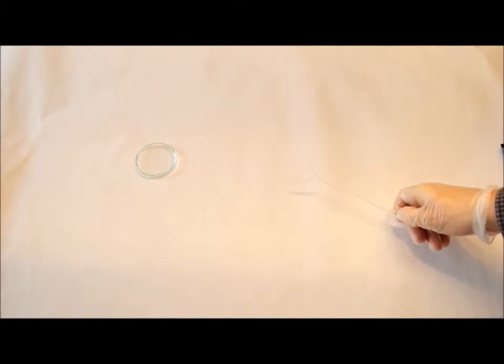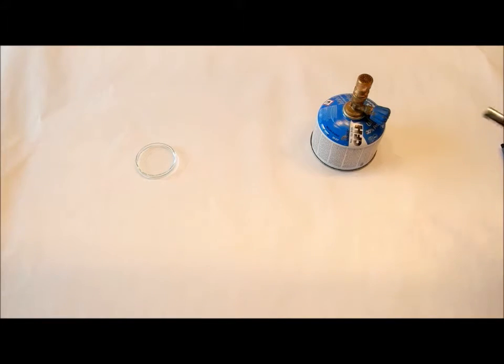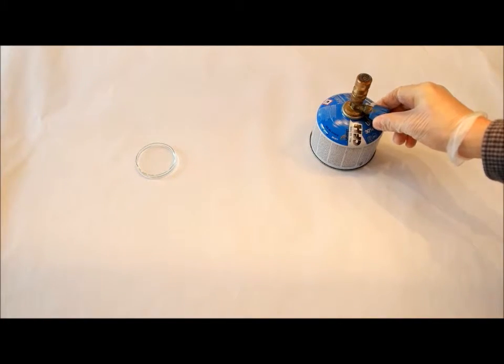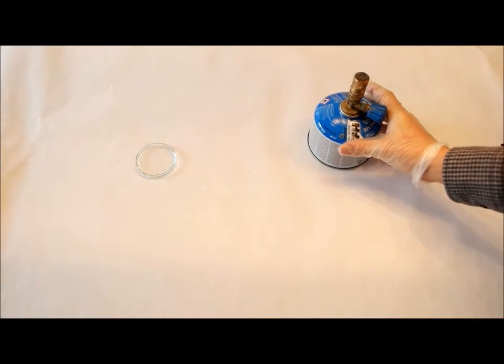In the first method we will use the spreader rod to make a full surface of bacteria on the agar plate. So we want the whole agar to be covered with bacteria. For that, light your Bunsen burner just to prevent the plates from air contamination.